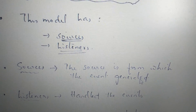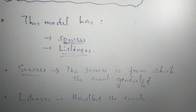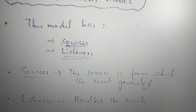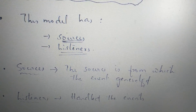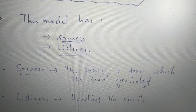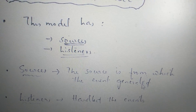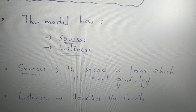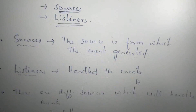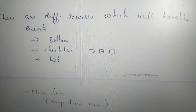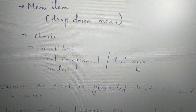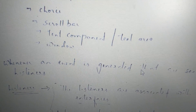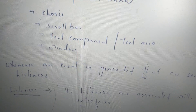Listeners are also the interface. The event sources include: button, checkbox, list, drop-down menu, menu item, choices, scroll bar, text box, and window.